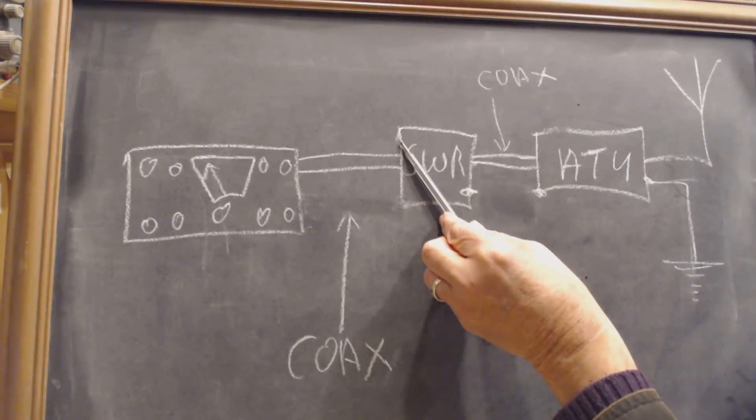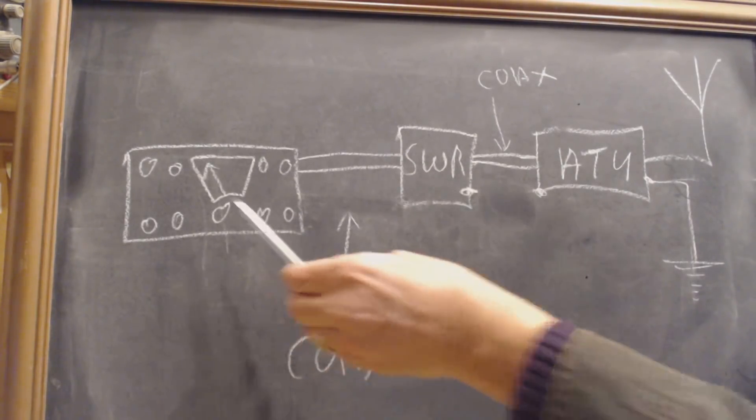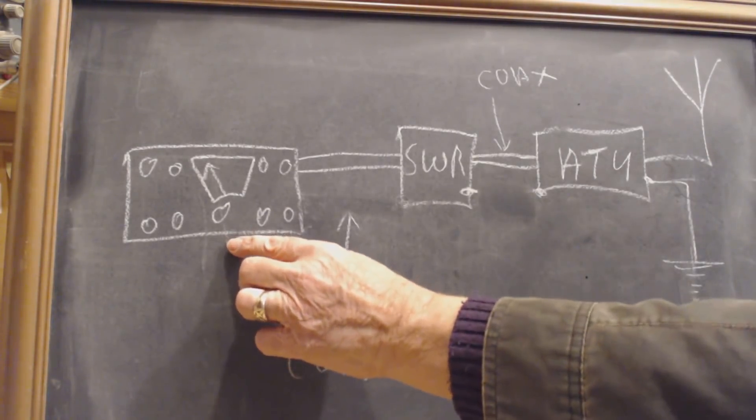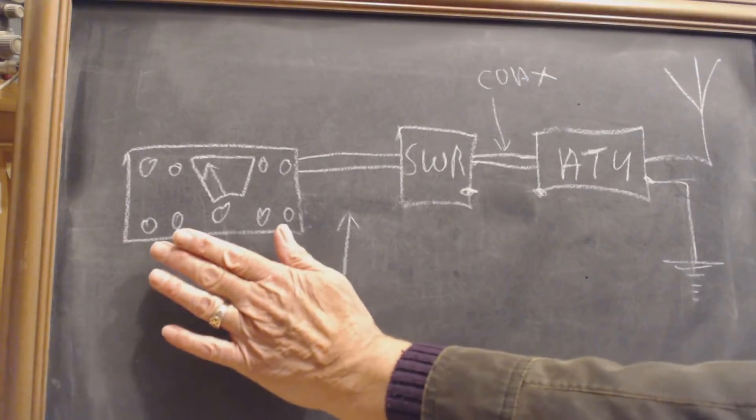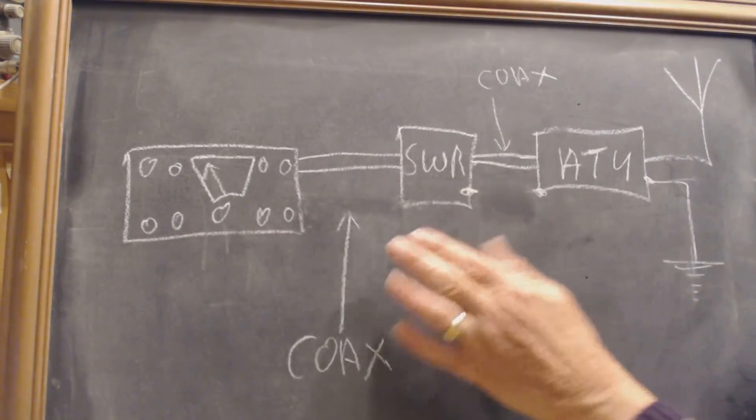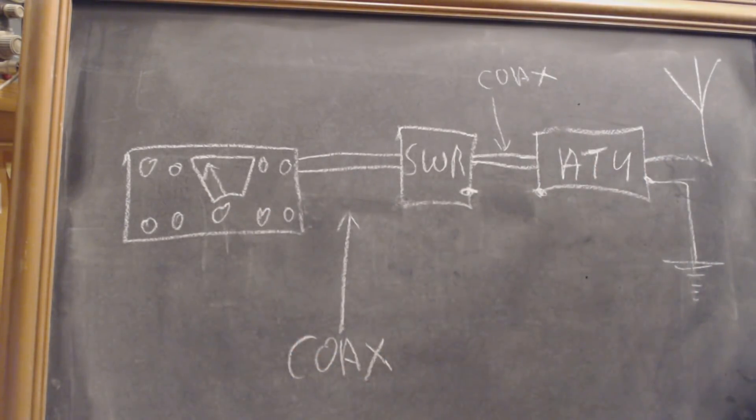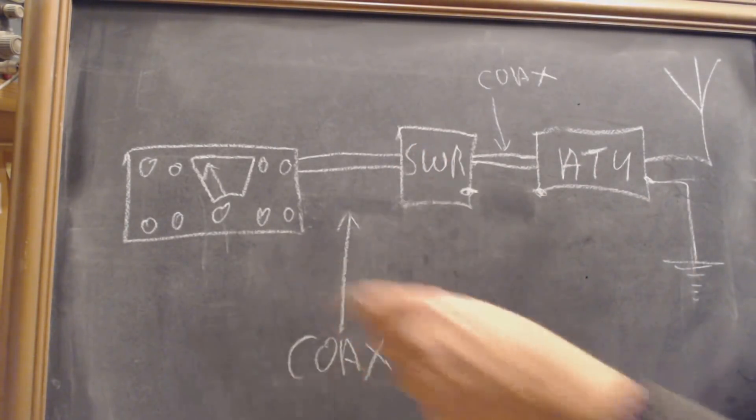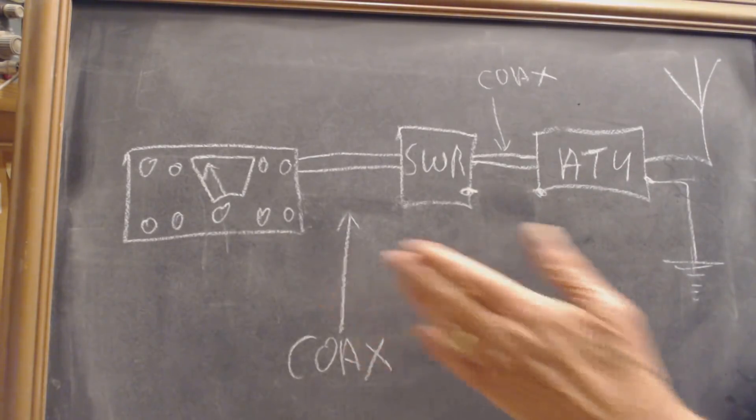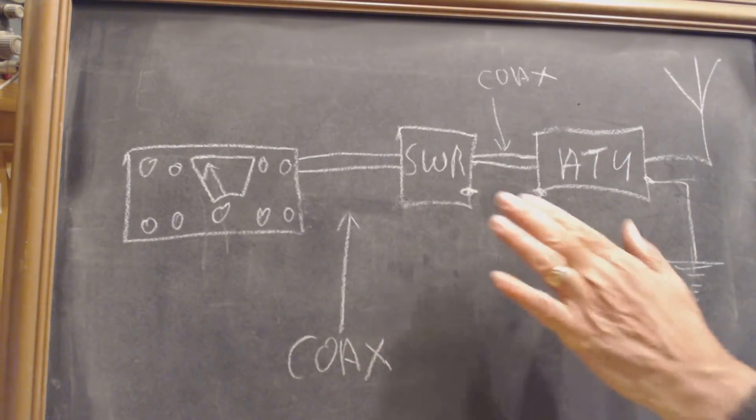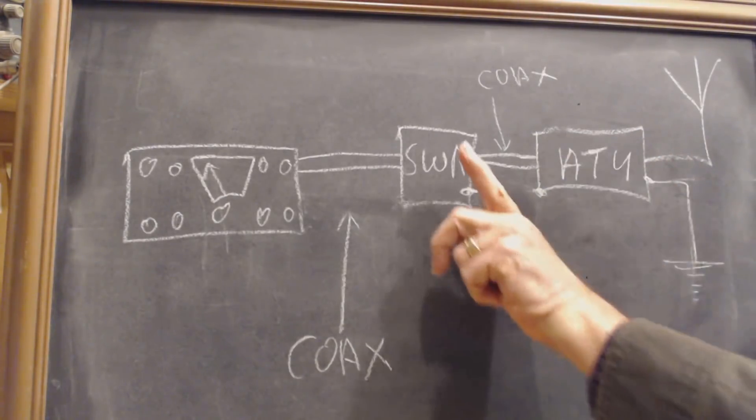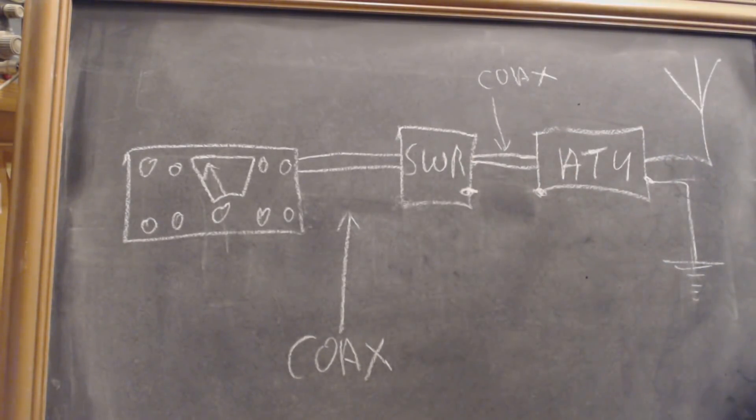When you've done that, the ATU is set for that particular frequency, if you're on, say you're on 3.575 megs, you've now set this up for that, if you want to change frequency, you will find you have to readjust this, because the SWR will start to rise as you go off frequency, somewhere else on 80 meters, so you just put the carrier out again on low power, and adjust the ATU for that minimum reading there.